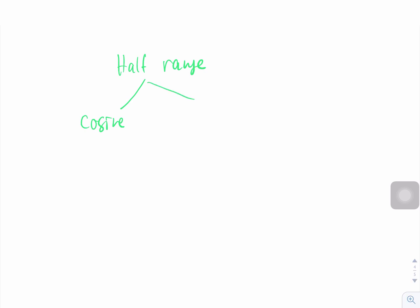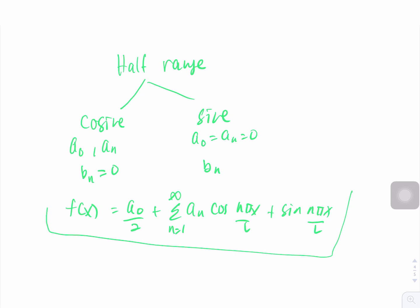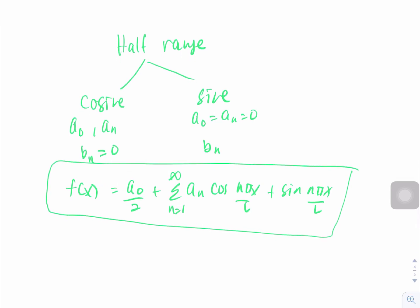Let's do a recap. If we have a half-range series and want to expand into a Fourier cosine or sine series: for cosine, we find a₀ and aₙ with bₙ = 0; for sine, a₀ and aₙ equal zero and we find bₙ. We substitute back into the general Fourier series formula. The key is to identify whether our half-range function is odd or even.